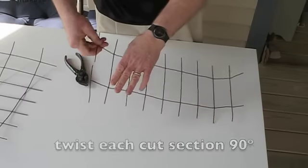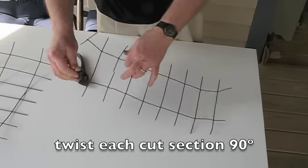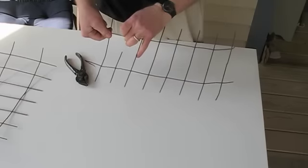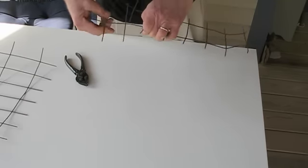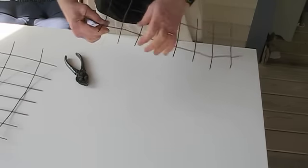Cut a section of fencing off from your scrap, cut into alternating cross pieces, twist those cross pieces at 90 degrees, and you've got a self-standing bird spike strip.